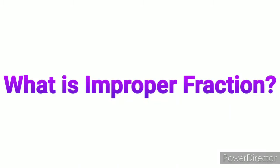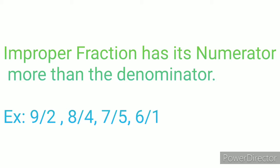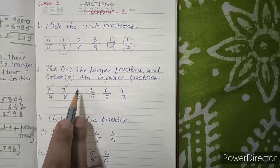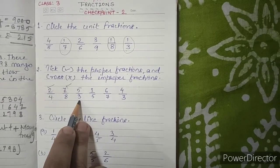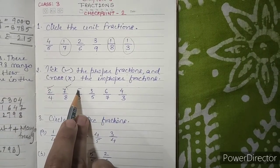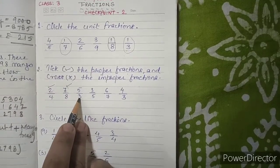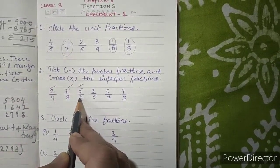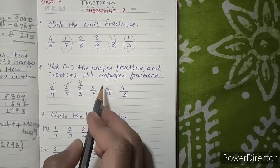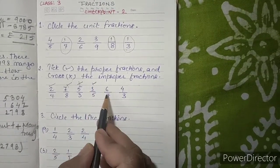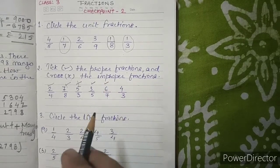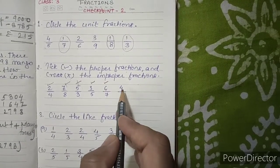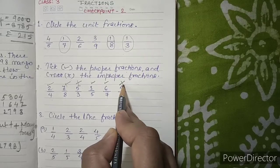An improper fraction has its numerator more than the denominator. In the question, 5 by 3 is given — 5 is numerator and 3 is denominator, so numerator is greater than denominator; we cross this as it is improper. Now 3 by 5 is a proper fraction. 6 by 7 is a proper fraction. 4 by 3 is an improper fraction, so we cross it.